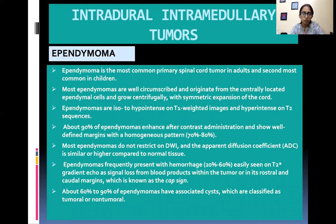Ependymoma is the most common primary spinal cord tumor in adults and second most common in children. Most ependymomas are well circumscribed, originating from centrally located ependymal cells, and grow centrifugally with symmetric expansion of the cord. They are iso-to-hypo intense on T1-weighted images and hyper intense on T2. About 90% enhance after contrast administration showing well-defined margins with a homogeneous pattern. Most ependymomas do not restrict on diffusion-weighted images and the ADC is similar or higher compared to normal tissue.